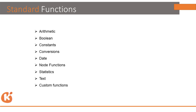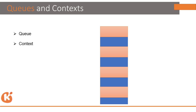In message mapping we have different palettes: arithmetic, boolean, constant, conversion, date, node function, and custom function. In the node function we handle the context of fields. In custom function we can create a Groovy script to fulfill our requirements. In message mapping we have two main concepts: queue and context.